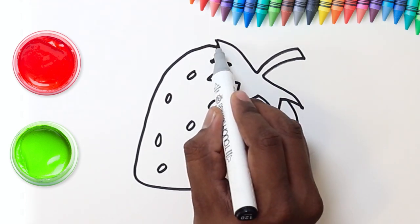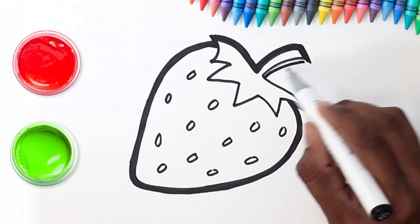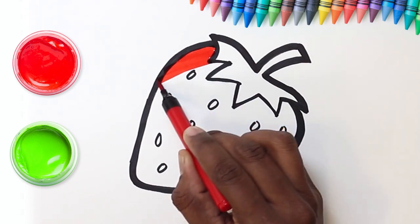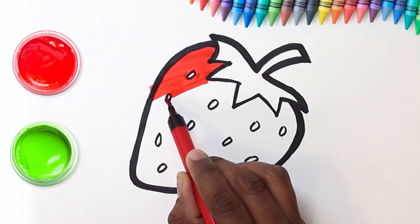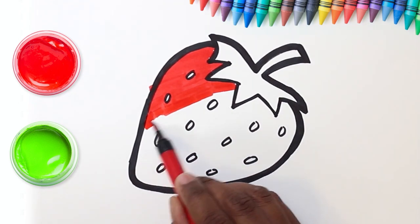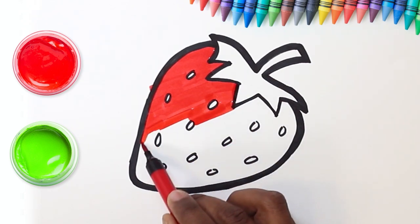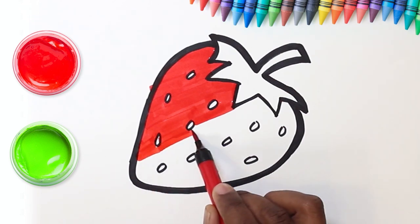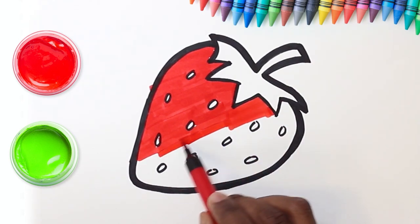Let's do a nice, neat outline. And now we begin to color in. A bright red for your yummy strawberry. Painting is so much fun.